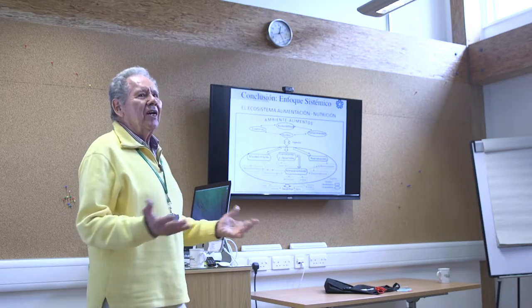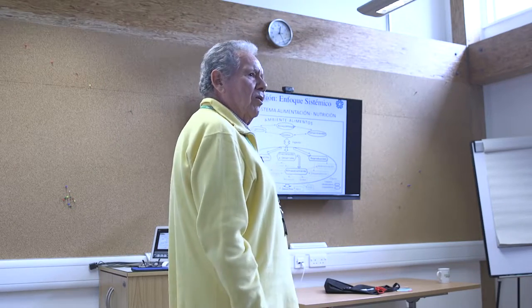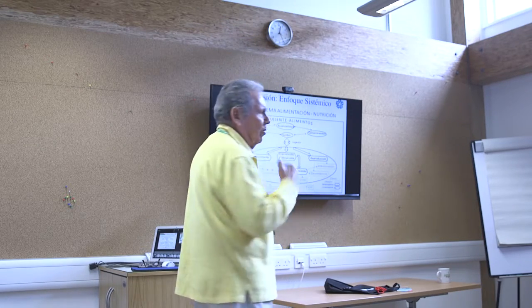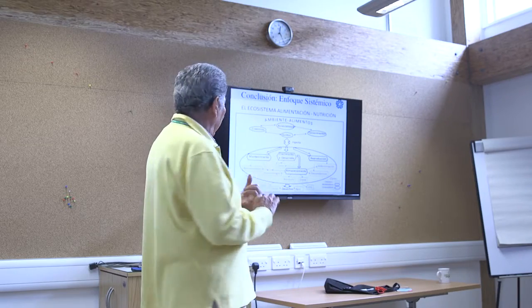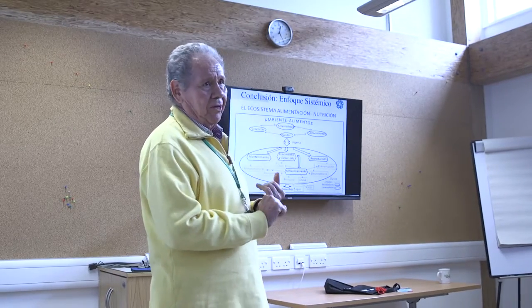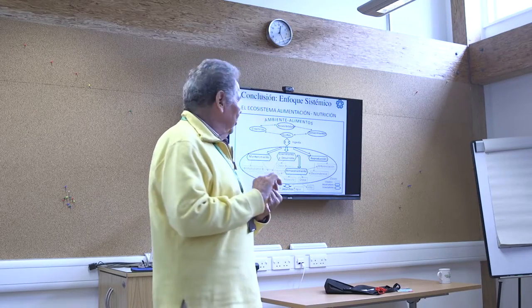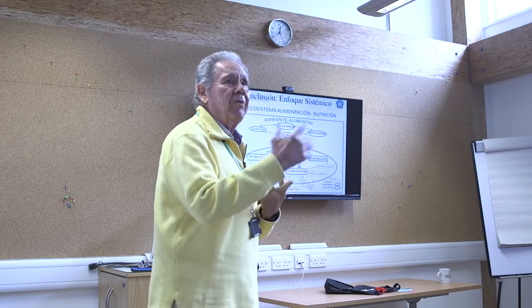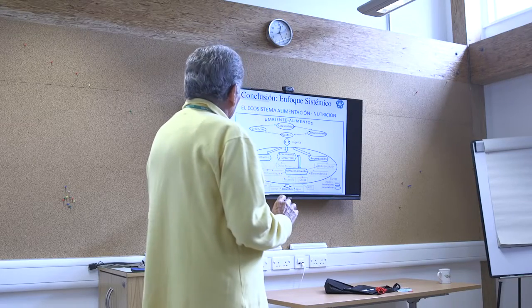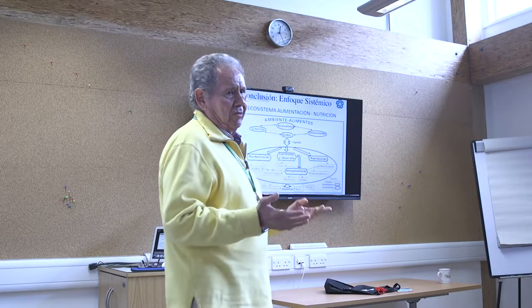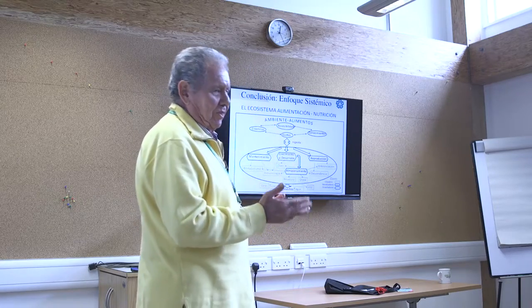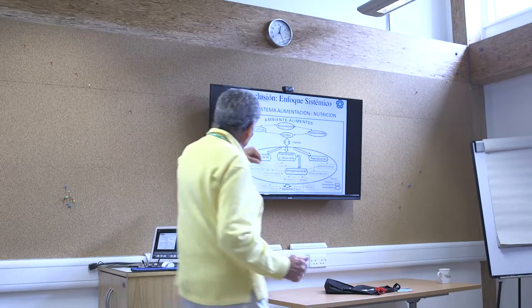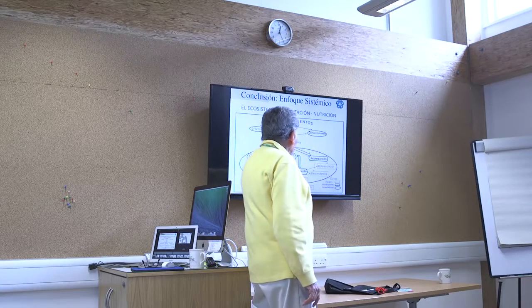The point is that a child is a system, and the system doesn't depend only on what goes into the system — it depends on what it does once it gets in. Once it gets into the system, it can be used for maintenance — the first priority is to keep the system going — for growth, for storage, or for reproduction. In children less than two years of age, it is used mainly for maintenance, growth, and storage.